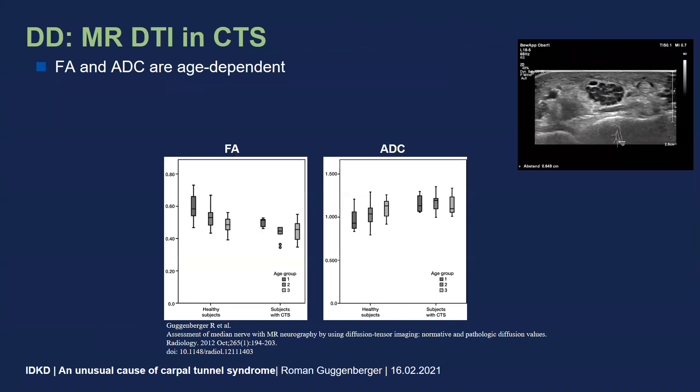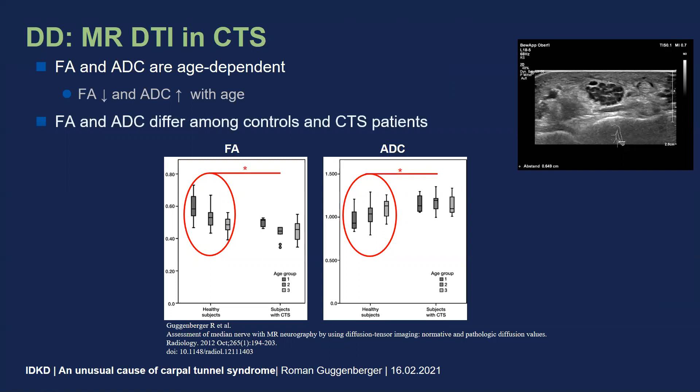Diffusion tensor imaging may also be an interesting modality when you want to rule out carpal tunnel syndrome. We did a study where we found that the fractional anisotropy and apparent diffusion coefficient of the median nerve at the flexor retinoculum are age dependent in healthy individuals. FA decreases and ADC increases with age. However, both values were significantly different in a cohort with carpal tunnel syndrome patients, where FA was significantly higher and ADC significantly lower compared to carpal tunnel syndrome patients.